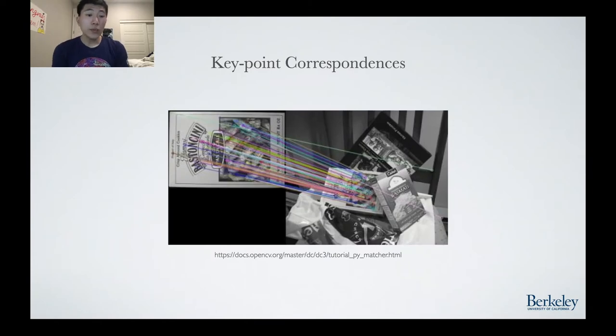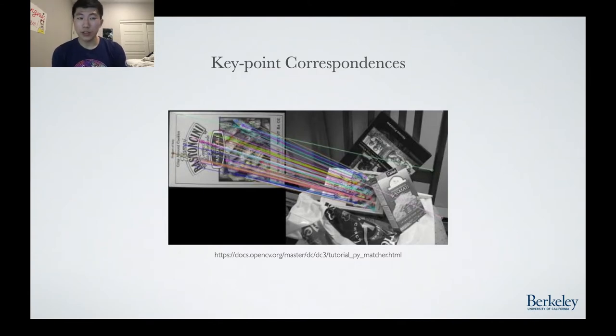Once we have these key points, we can perform key point matching. Using these correspondences between two different images, we can now move on to finding the transformation between these two images.